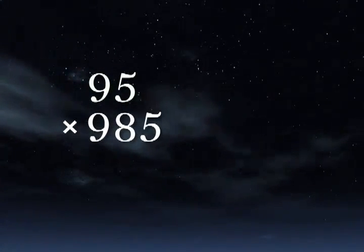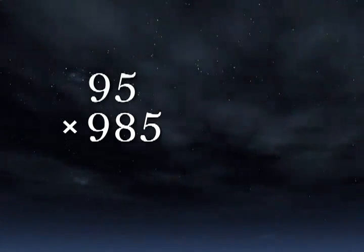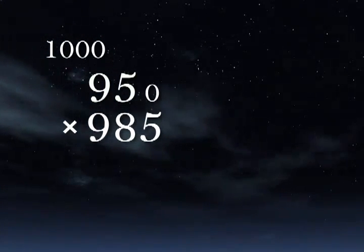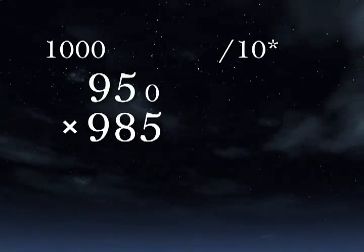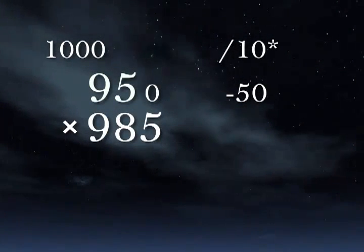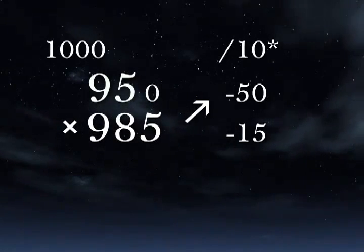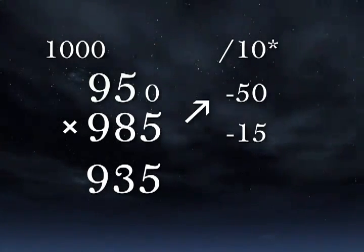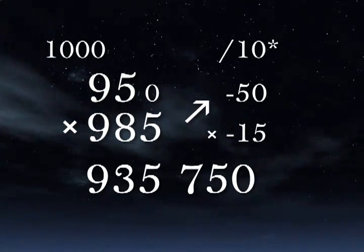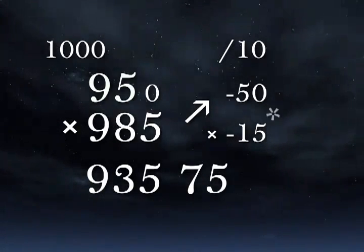Take a look at this problem. The first number calls for base 100, but the second calls for base 1000. There's a simple way to handle the problem. Multiply the 95 by 10 so that we can use base 1000. That will give an answer which is 10 times too big. So at the end of the problem, we'll divide by 10. 950 is 50 less than 1000, so we write negative 50. 985 is 15 less, so we write negative 15. Working crosswise, 985 minus 50 is 935. That's the left side of the answer. Negative 50 times negative 15 is 750. That's the right side. So the gross total is 935,750. Divided by 10, that gives us a final answer of 93,575.